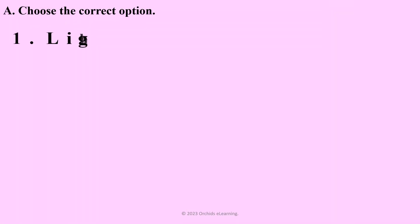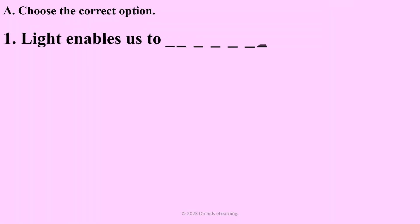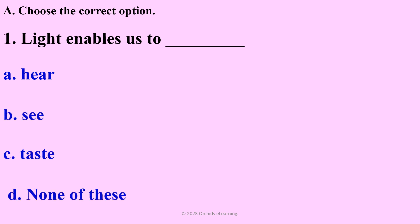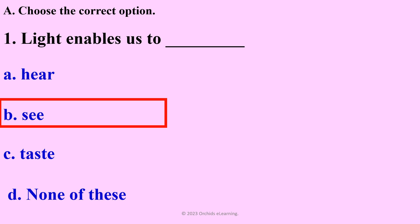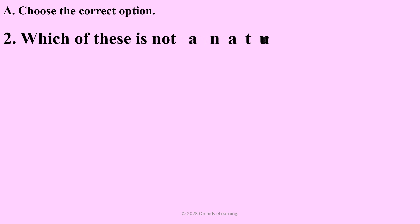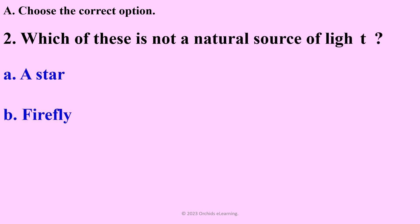Choose the correct option: Light enables us to — answer: B. Which of these is not a natural source of light? — answer: C.